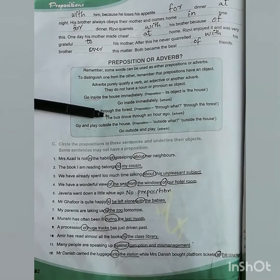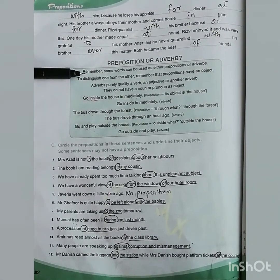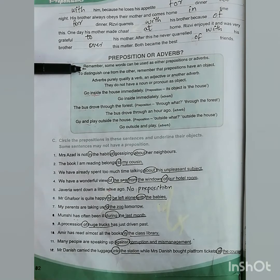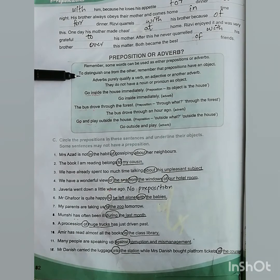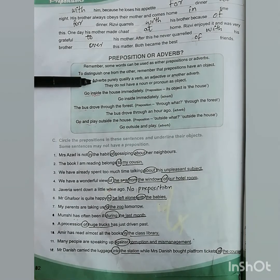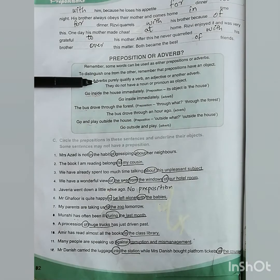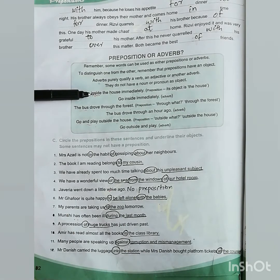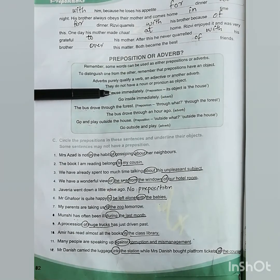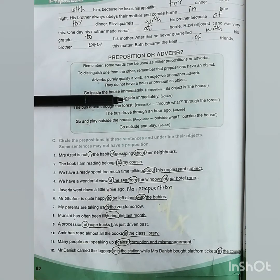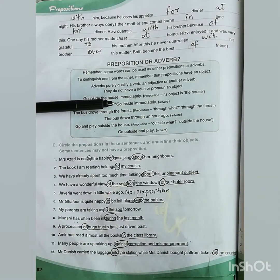Moving towards the preposition vs. adverb difference. Remember, some words can be used as either prepositions or adverbs. To distinguish one from the other, remember that prepositions must have an object, while adverbs qualify a verb, an adjective, or another adverb — they do not have a noun or pronoun as object. For example: 'Go inside the house immediately' — here 'inside' is a preposition and 'the house' is its object. But in 'Go inside immediately', there is no object, so 'inside' is functioning as an adverb.